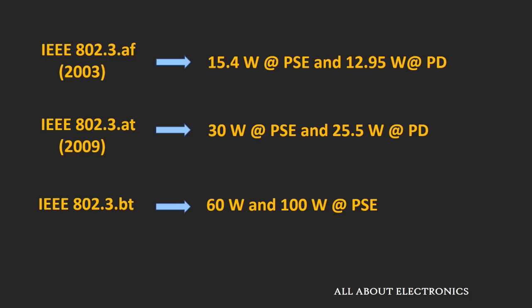Three different standards exist for Power over Ethernet technology. The first standard, IEEE 802.3af, supports a maximum power of 15.4W supplied by the PSE. The second standard, also known as PoE+, supports a maximum power of 30W supplied by the PSE. The third standard can support up to a maximum of 100W of power at the PSE end.